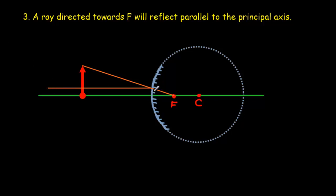And it would reflect off this way. I'm going to make this a dotted line back here because no real light is behind the mirror. So the light comes in heading straight at F and then bounces off parallel to the principal axis. That's the third rule.